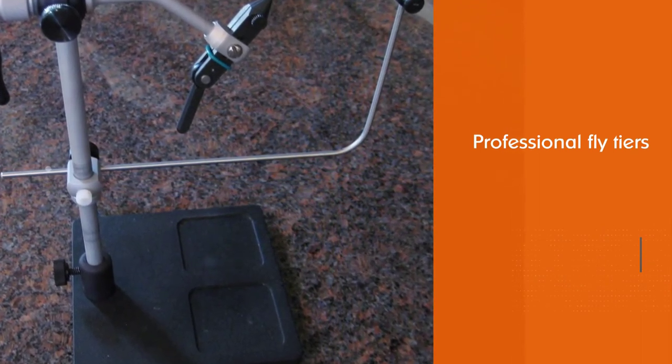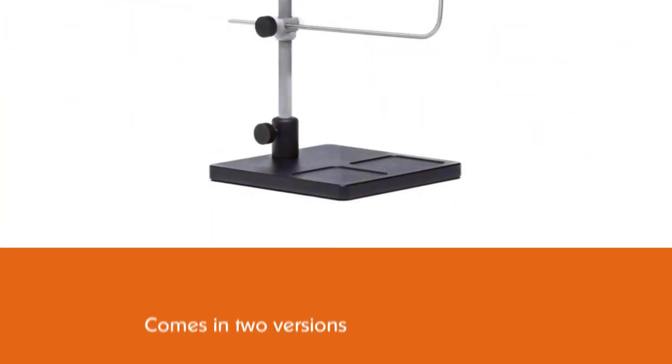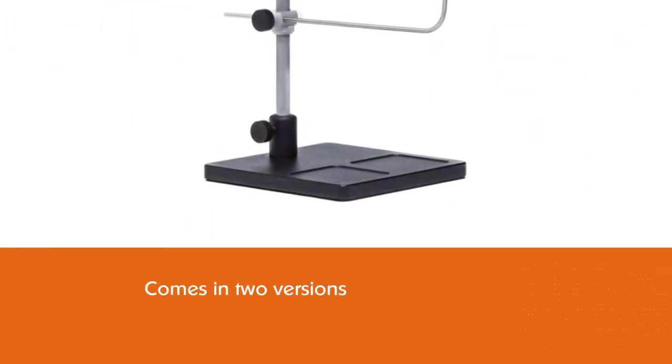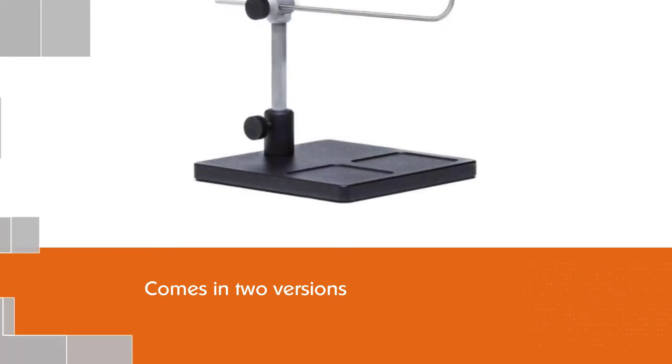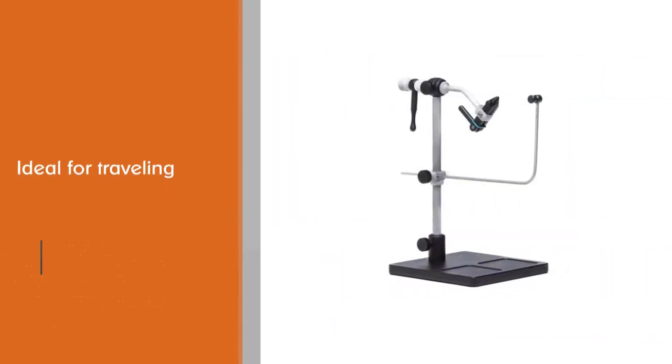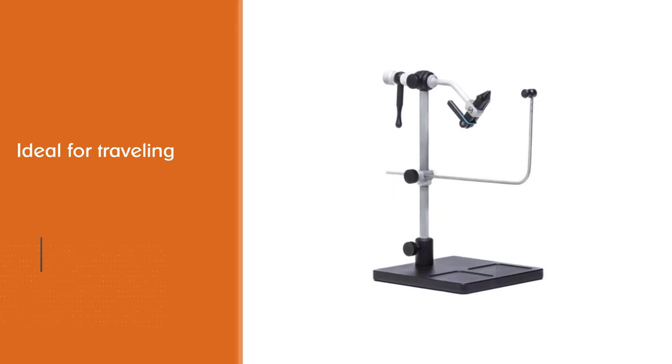The Renzetti Traveler 2200 comes in two versions: pedestal or C-clamp, which makes it even lighter, ideal for traveling as the name suggests. The Renzetti Traveler 2200 is very easy to use and your tying sequence is never compromised by unwanted hook movement.